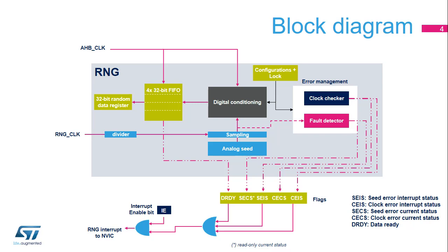The TRNG block must be properly initialized with this sequence. First, write in the RNG CR register the bit CONDRST equals 1 together with the correct RNG configuration. Second, perform a second write to the RNG CR register with the bit CONDRST equals 0, the interrupt enable bit IE equals 1, and the RNG enable bit RNGEN equals 1. An interrupt is now generated when a random number is ready or when an error occurs.